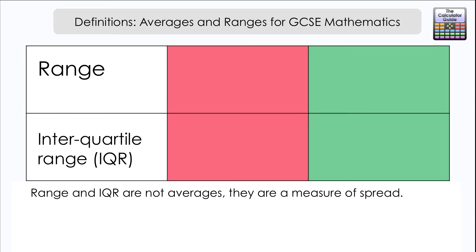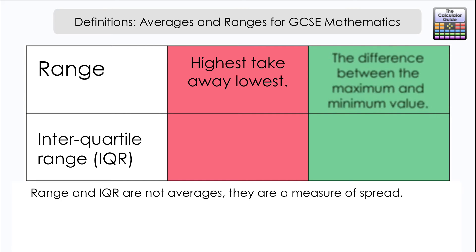The definition that I often get for the range is 'highest take away lowest.' That is what you need to do to work out the range. But let's put that in more mathematical terms: it's the difference between the maximum and the minimum value. You find a difference by subtraction, the highest value, the maximum, and the minimum value, the smallest.